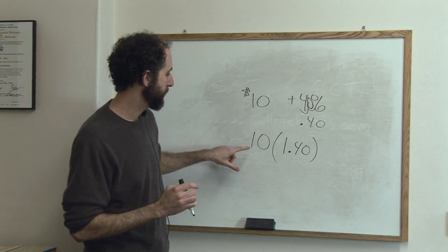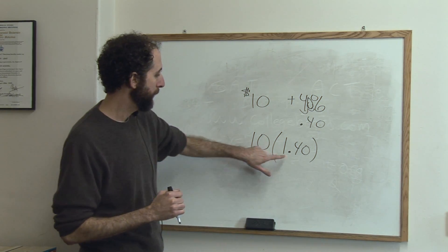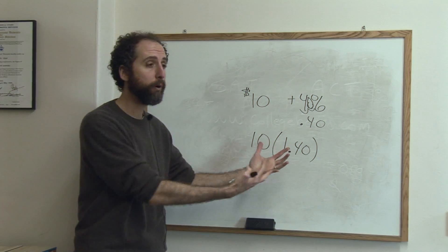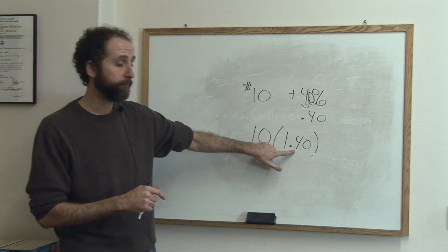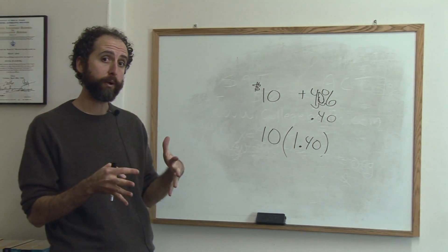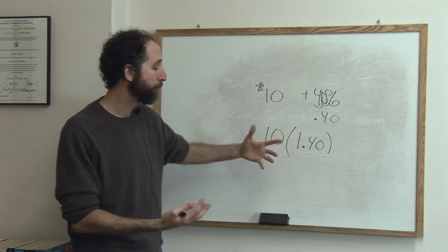And the reason we do that is because this says take the $10. 10 times 1 is 10, so take the whole $10 and then add on an additional 40%. So 1.40 implies the $10 plus 40% more.